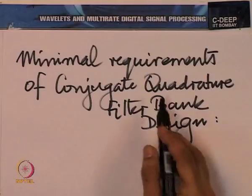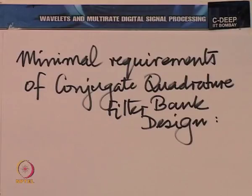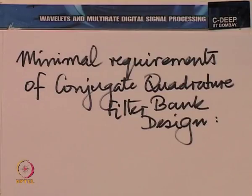You might wonder where the name conjugate quadrature comes from. It is the quadrature word which is important. The quadrature word comes in some sense from the idea of a 90-degree shift. What we have done is relate the high pass filter and the low pass filter frequency responses by a shift of π on the frequency axis — a low pass filter with cutoff π/2 becomes a high pass filter with cutoff π/2 by replacing z by -z. This brings what is called a quadrature relationship.